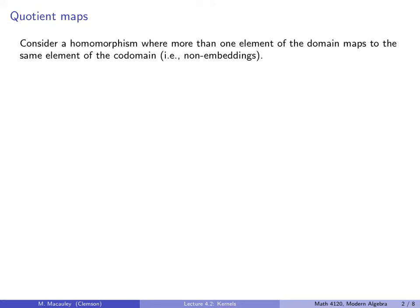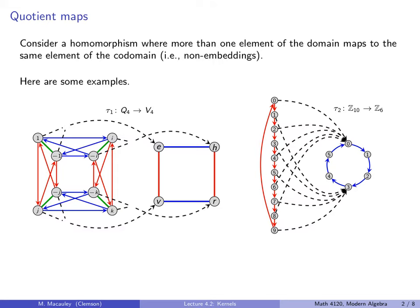Recall from the previous lecture that there were two types of homomorphisms. The first were the embeddings, which were those that were one-to-one mappings. And the others were quotient maps — homomorphisms where more than one element of the domain maps to the same element of the codomain.